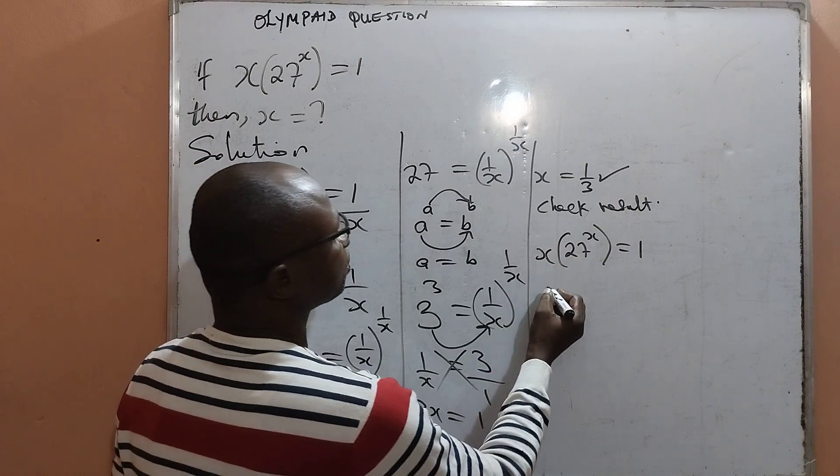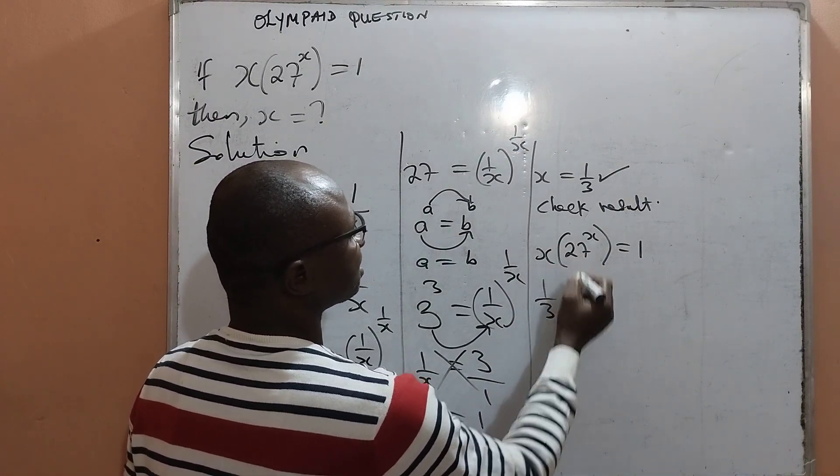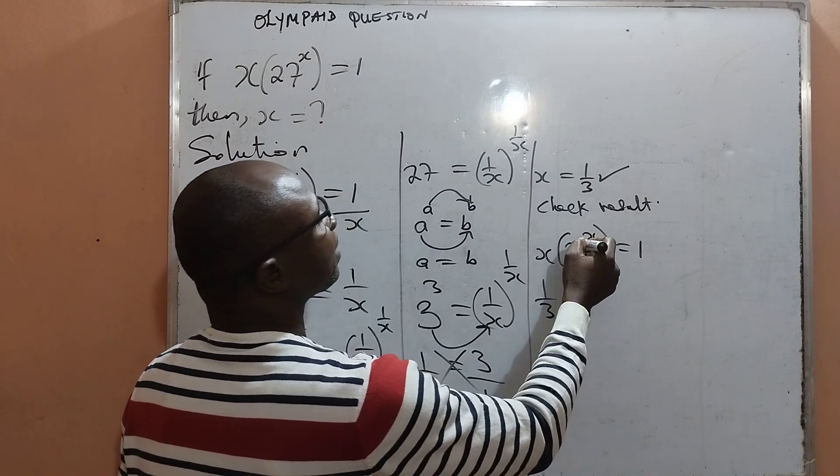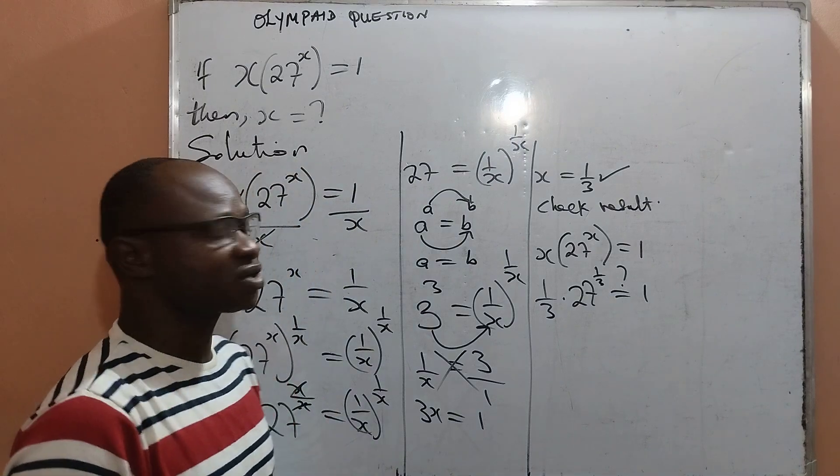So here is x, which is 1 all over 3, then multiplying 27 raised to the power x, which is raised to the power 1 over 3. Will this be equal to 1? That is the question.